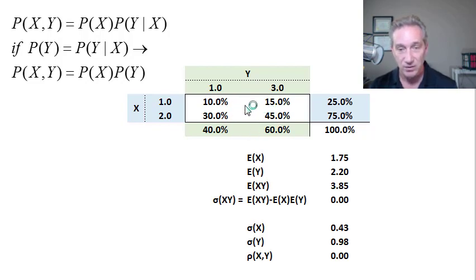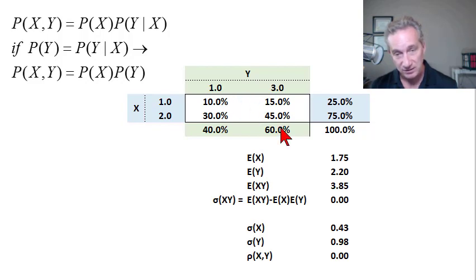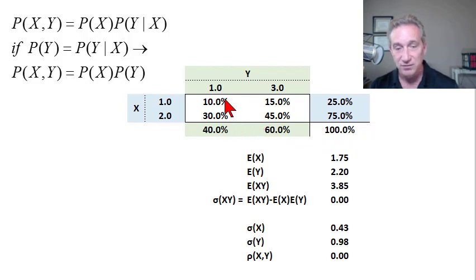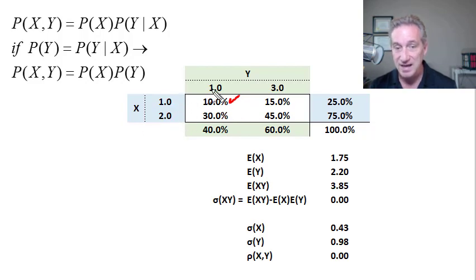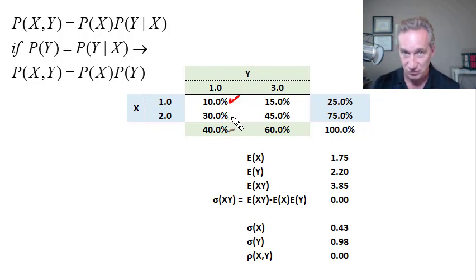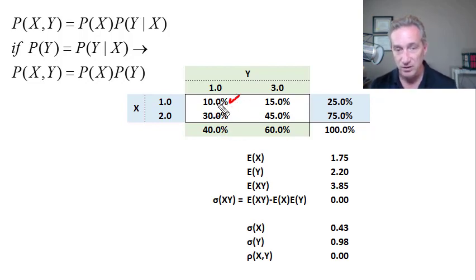Inside the square, this is a probability matrix, meaning that these are joint probabilities and they need to sum to 100%, which they do. So this is valid. For example, the 10% is a joint probability that X equals one — and 'and' is the keyword that signifies joint probability — and Y equals one.